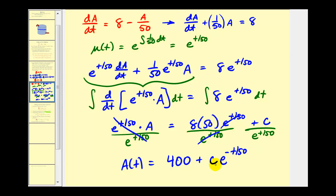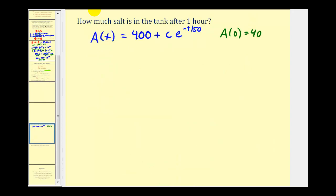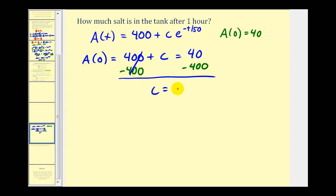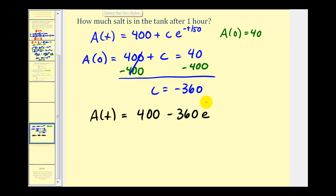Now that we have the general solution, we find the particular solution using the initial condition A(0) = 40, because there are 40 pounds of salt to begin with in the 200 gallons. Substituting t = 0: 400 plus C times e⁰ equals 40, so 400 plus C equals 40, giving C = −360. Therefore, the function modeling the mixing solution is A(t) = 400 − 360e^(−t/50). We can now determine how much salt is in the tank after one hour, but since t is in minutes, we must find A(60), not A(1).